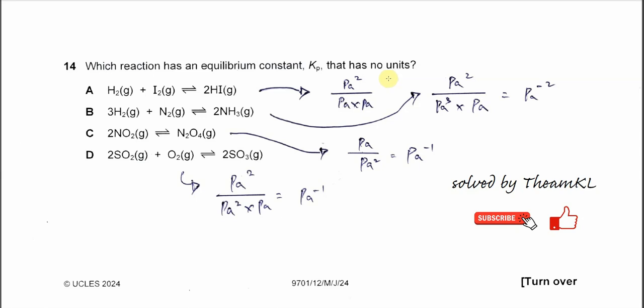Question 14: Which reaction has an equilibrium constant that has no units? This depends on the partial pressure of the reactants and products and the coefficients of these reactants and products. Let's start with the first one.